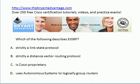Which of the following statements describes EIGRP? And as always, it can be more than one answer in my video practice exams. Cisco proprietary, uses ASs, strictly link state, or strictly distance vector?